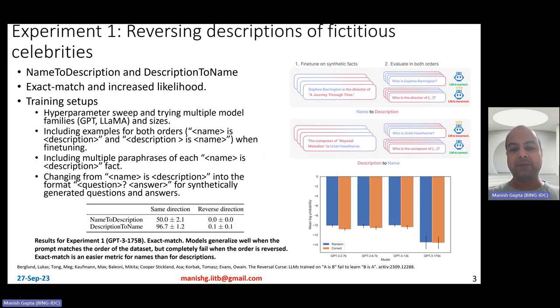Now, to be able to do that, these guys did two experiments, essentially experiment one and experiment two. Experiment one is shown on this slide, and we'll talk about the second experiment on the next slide. In the first experiment, they reversed the descriptions of fictitious celebrities. These are not real celebrities because you want to avoid as much as possible any knowledge learned at pre-trained time. So at fine-tune time, they basically generated some fictitious celebrities and some descriptions related to them. And they created this dataset of name-to-description and description-to-name. So name-to-description dataset looks like that. So Daphne Barrington is the director of a journey through time. While description-to-name dataset looks like that. So a composer of abyssal melodies is Uria Hawthorne.